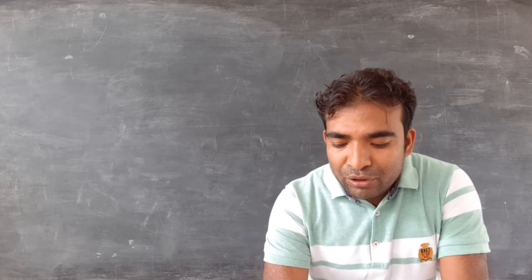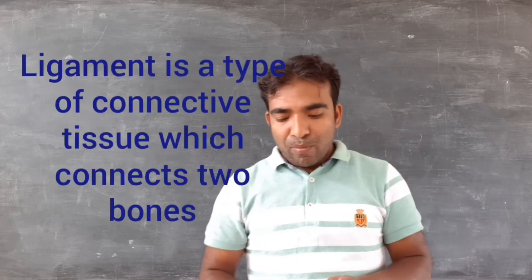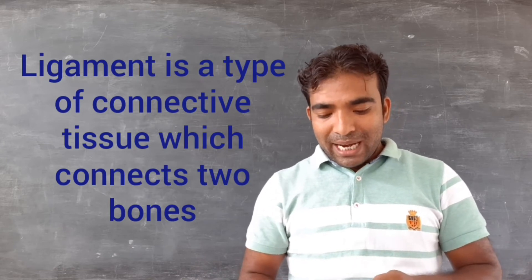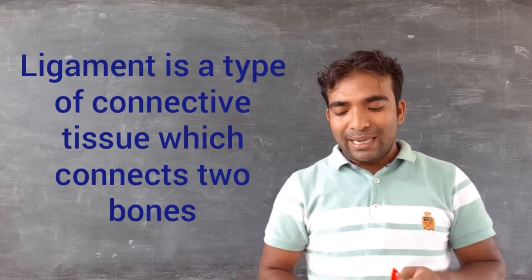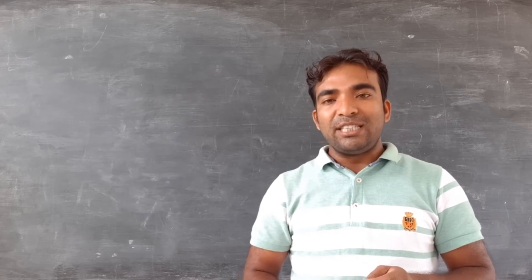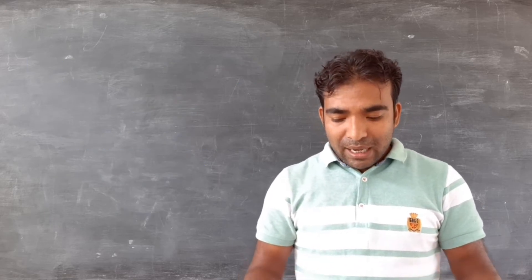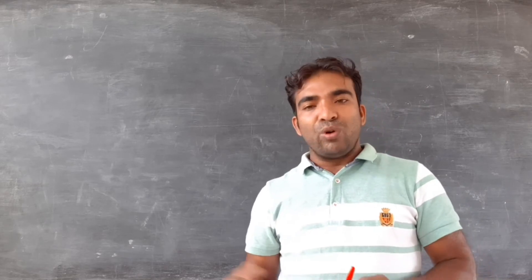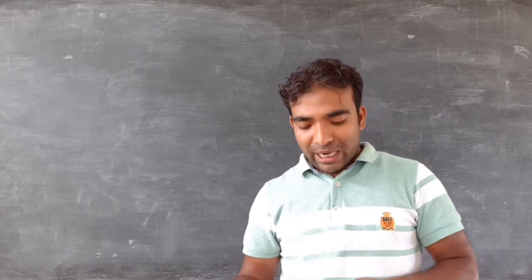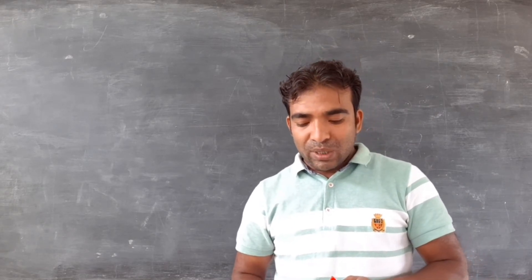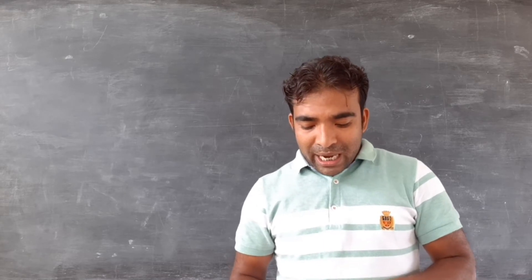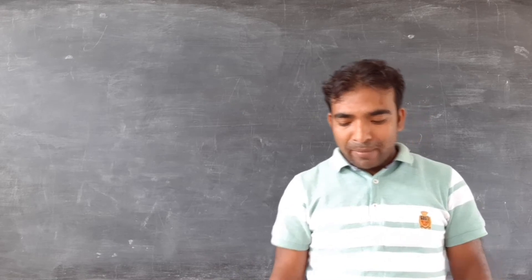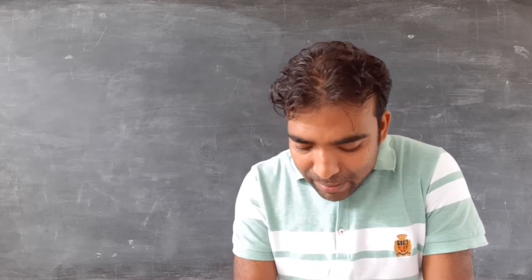The third type is the ligament - two bones can be connected by another type of tissue known as ligament. This tissue is very elastic, and ligaments have very little matrix. They connect bone with another bone. The last connective tissue type is cartilage, which can also be found in the animal body.